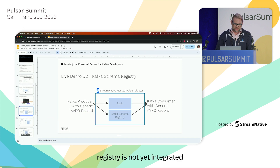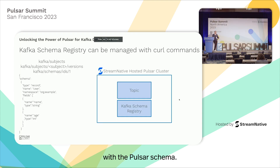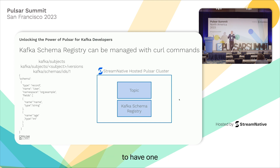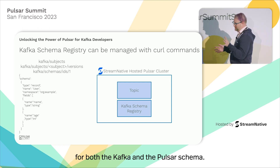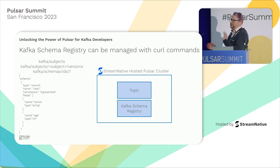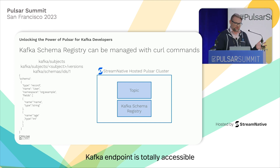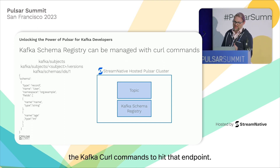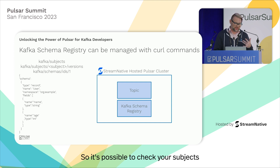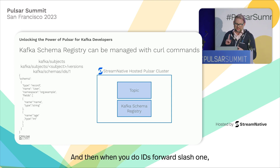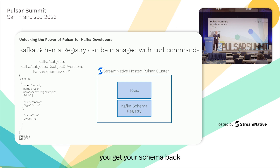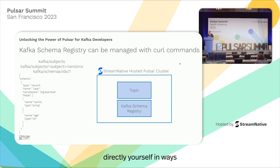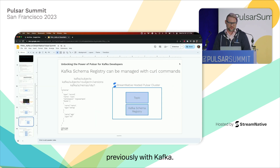The schema registry is not yet integrated with the Pulsar schema — that's to be done in the future to have one unified schema registry for both Kafka and Pulsar schemas. But that forward slash Kafka endpoint is totally accessible using Kafka curl commands. It's possible to check your subjects, the version of the schema for each subject, and when you do IDs forward slash one you get your schema back. You can manage the schema registry directly yourself in ways you may have already done with Kafka.